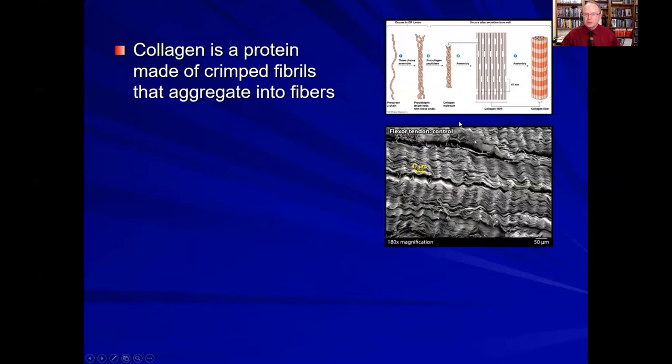Collagen is a protein made of crimped fibrils that aggregate into fibers. Here we have a single precursor to the collagen which forms pro-collagen, then a collagen molecule into a collagen fibril, and finally a collagen fiber. Here is a photomicrograph of a flexor tendon showing this crimp pattern or wavy pattern that is present in all collagen. This collagen crimp gives the collagen fiber some of its elastic properties.